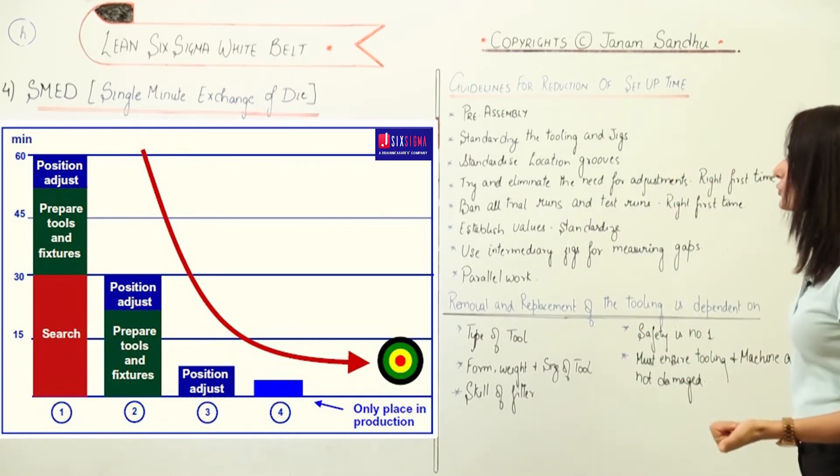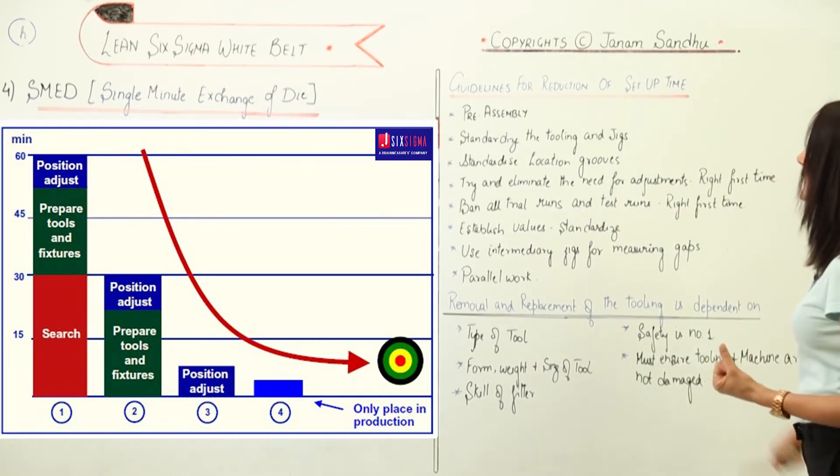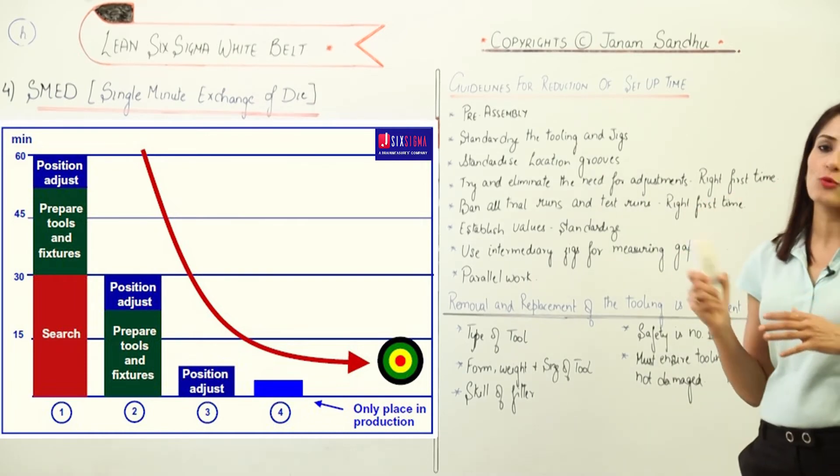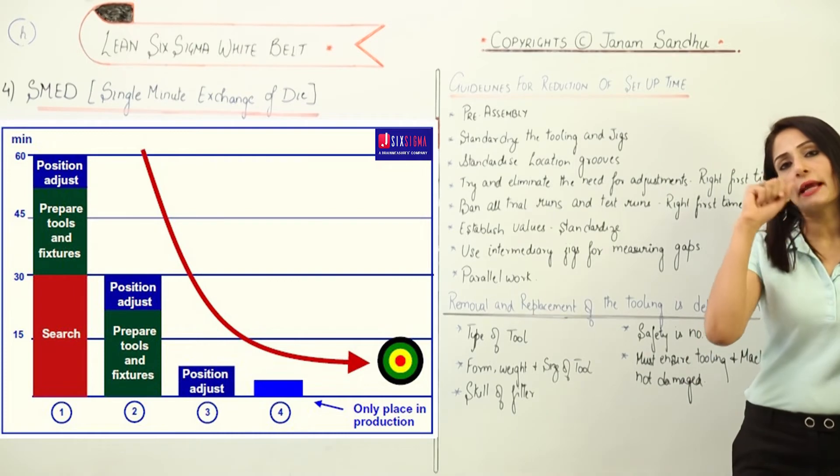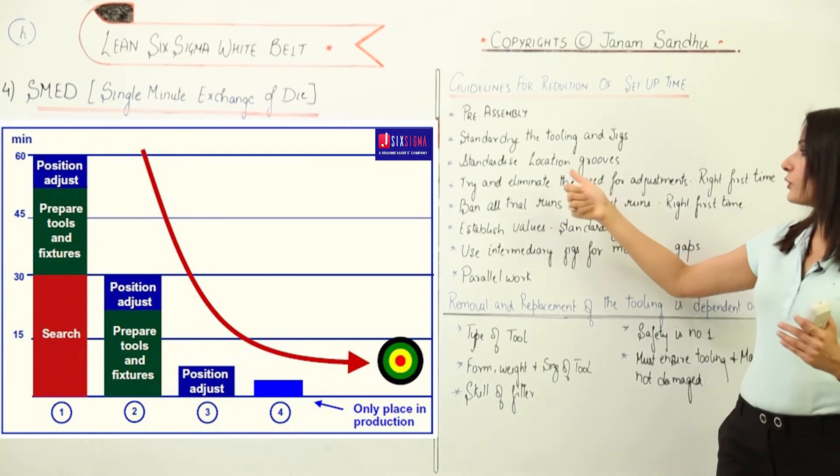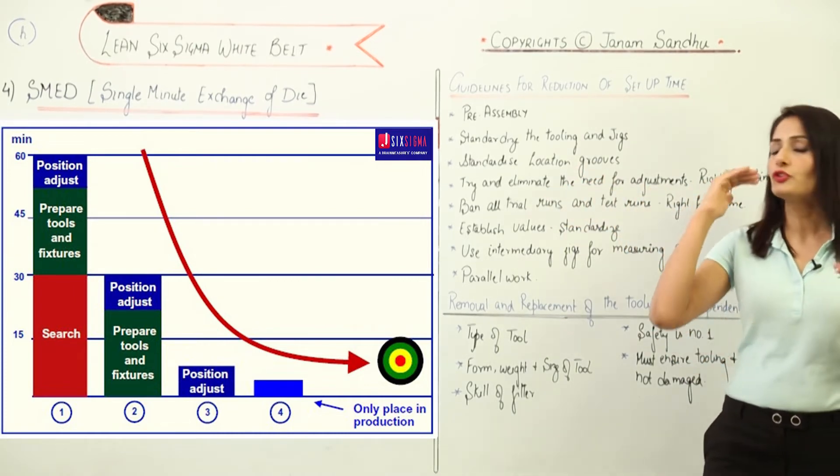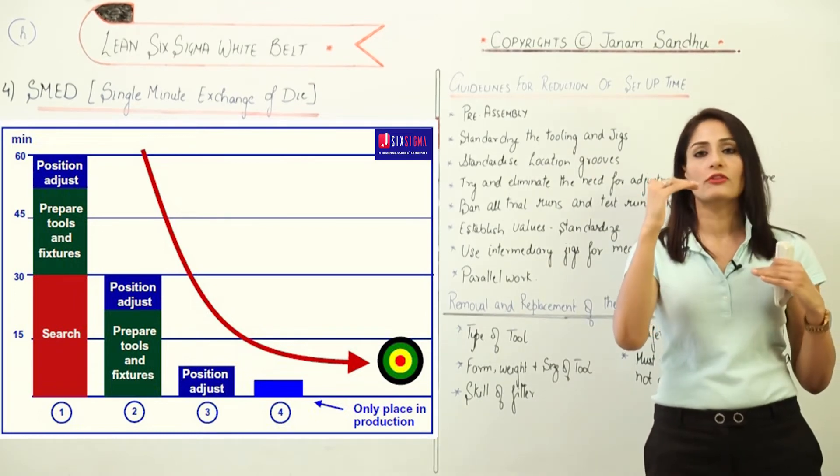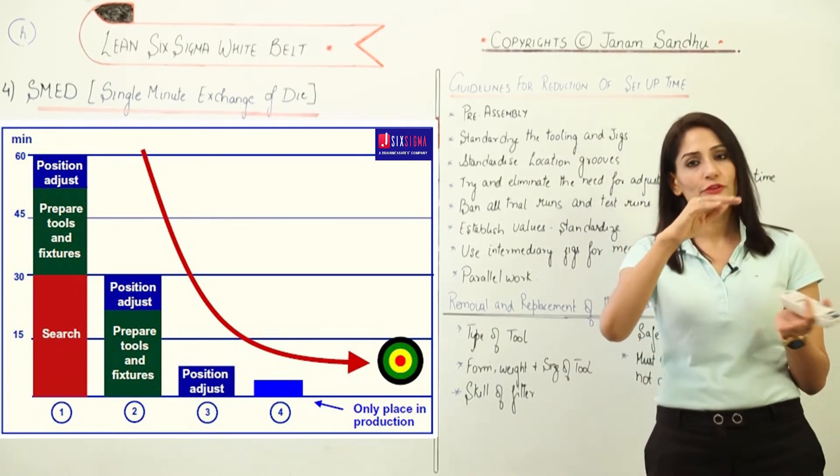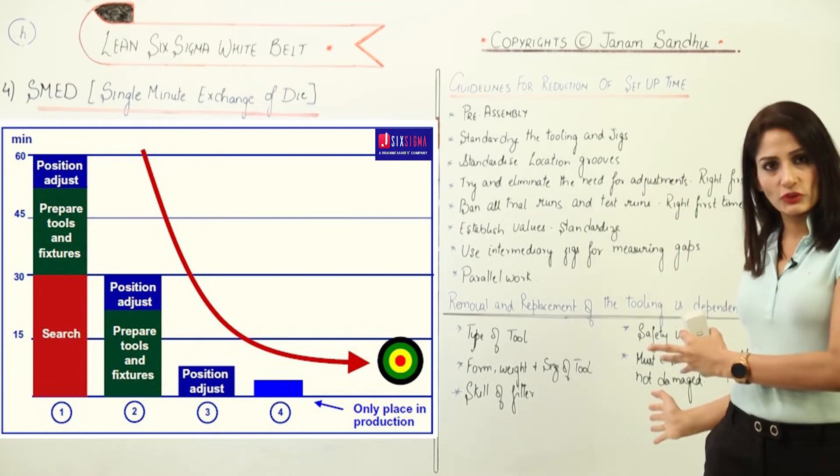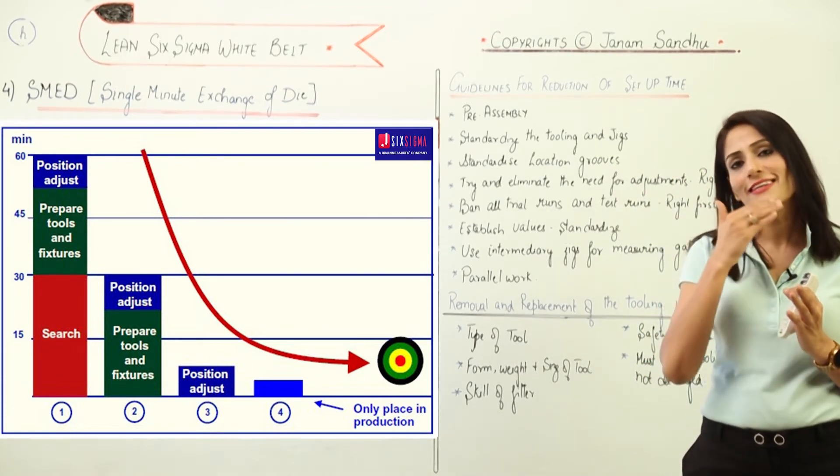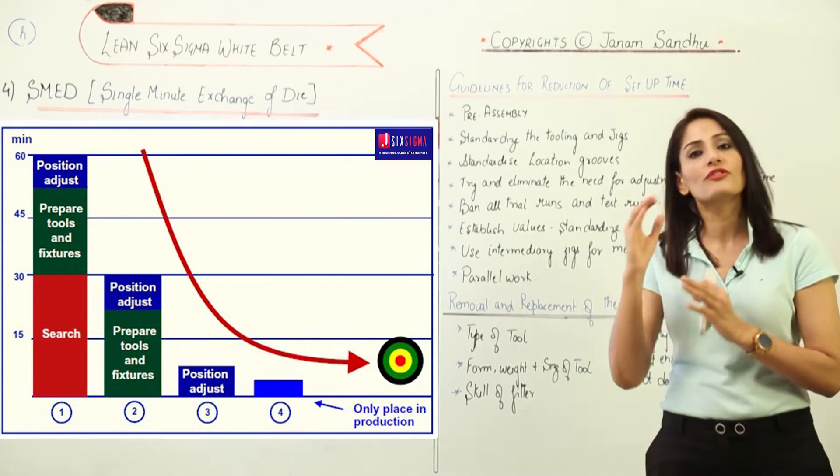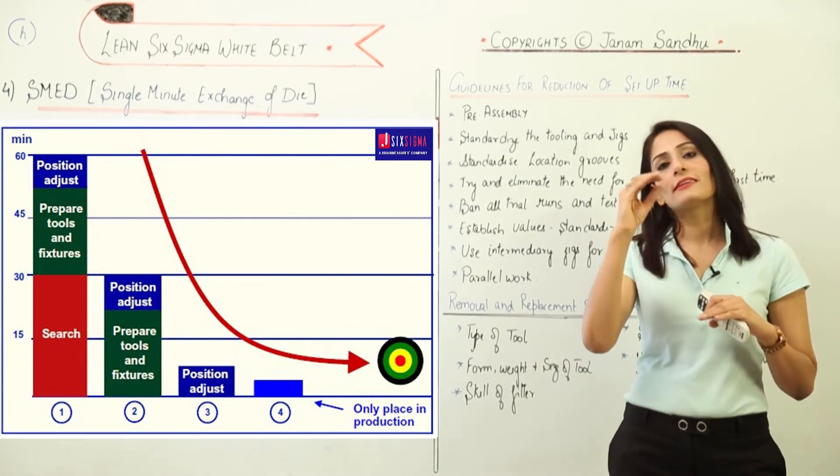Standardize location groups. Try and eliminate the need for adjustment. One thing you need to do if you really want your setup time to go down is try to eliminate the need for adjustment. Use jigs or anything so that you know this is the place - this is about a machine, but anything can be standardized, any process, any procedure can be standardized.